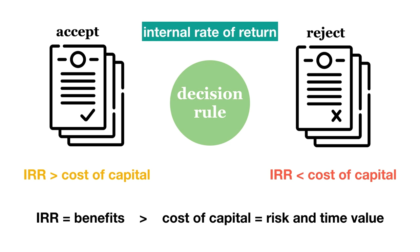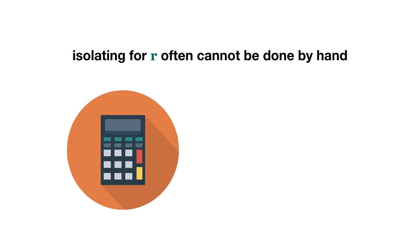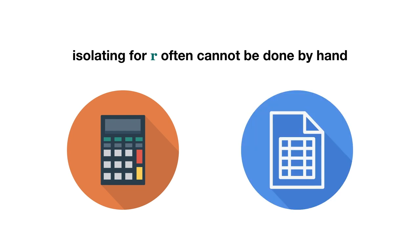With the annuities formula or even the simple PV formula, isolating for R is not possible or often cannot be done by hand. Financial calculators and Excel both have functions that allow you to calculate the IRR.